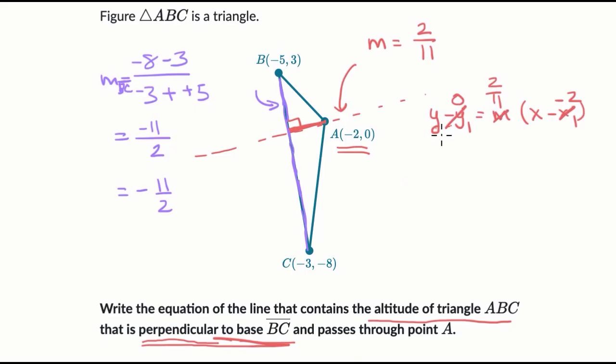And our slope is two elevenths. So we get, the left side simplifies to y is equal to two over 11 times x minus negative two, x plus two. So this over here, we could say we're done.